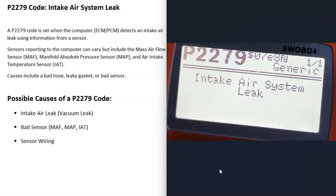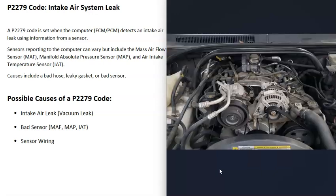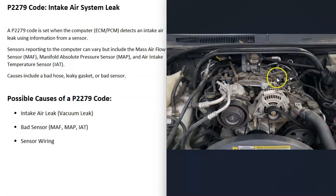The first possible cause of a P2279 code is that there is some kind of leak — air is getting into the engine somehow around the throttle body. This would be something like a bad hose or a bad intake gasket, something along those lines.